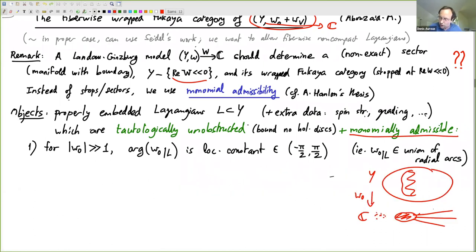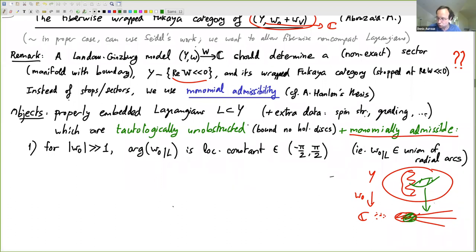Why is it useful to have Lagrangians that project to unions of arcs for Floer theory? Because now if I look at a holomorphic disk in Y and project it down to the base, the maximum principle tells me it can do stuff inside a compact region where I don't know what's happening. But outside, holomorphic disks have to be contained inside the fibers.